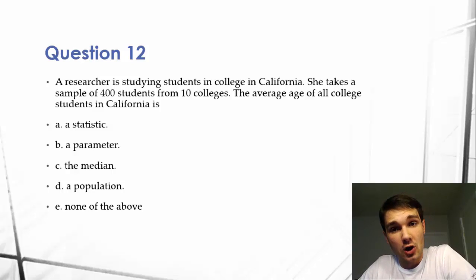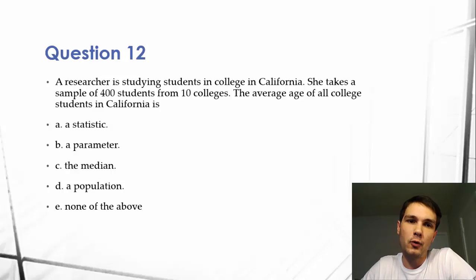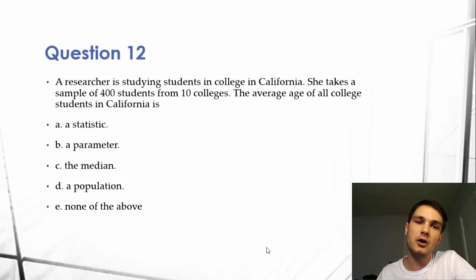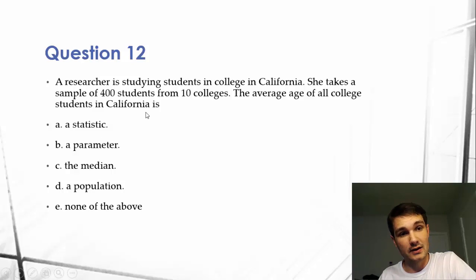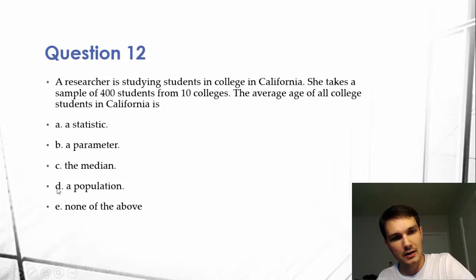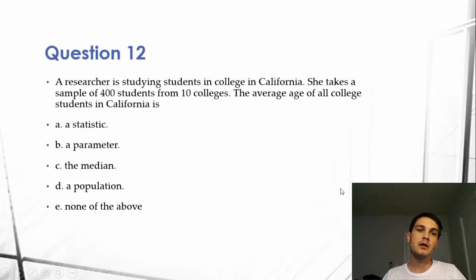A researcher is studying students in college in California. She takes a sample of 400 students from 10 colleges. The average age of all college students in California is: a statistic, a parameter, the median, a population, or none of the above.